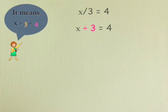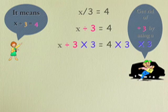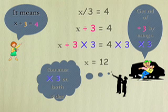The opposite of divide by 3 is times by 3. So if we do this to one side of the equation to get rid of the divide by 3, we do it to the other side, which becomes 4 times 3, and we get x equals 12.